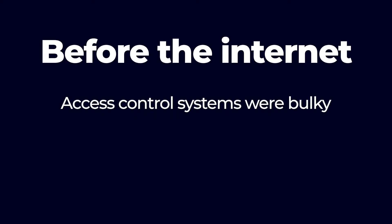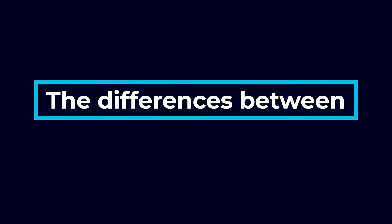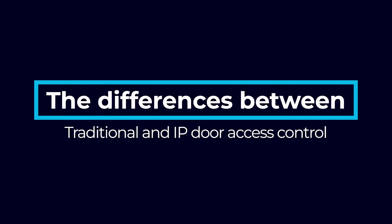Before the internet, access control systems were bulky, unwieldy, and expensive to maintain. These traditional systems required you to run physical wiring throughout your building and connect every access device to a central control hub. Next, let's go over the differences between traditional and IP door access control.